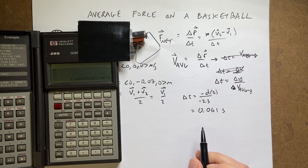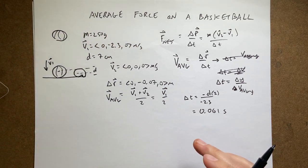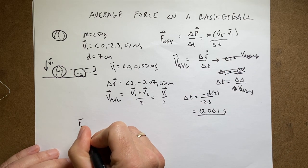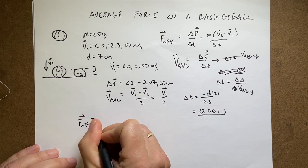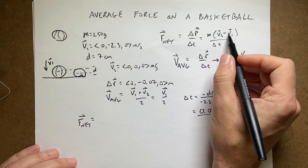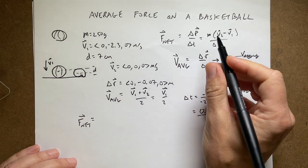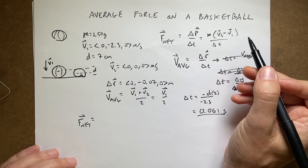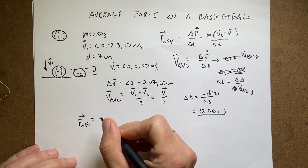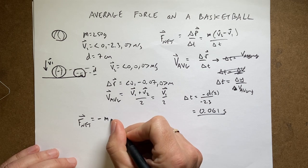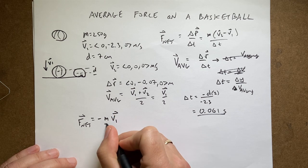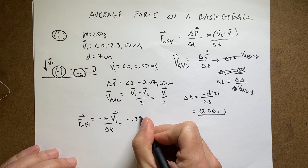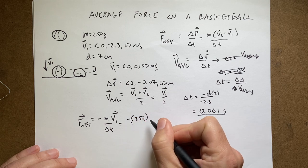And you see here I get a super small time, 0.061 seconds. So you couldn't just guess the time, but now I know the time interval. I can put it up there so I can say F_net, it's going to be delta p which is m times v2 is zero.